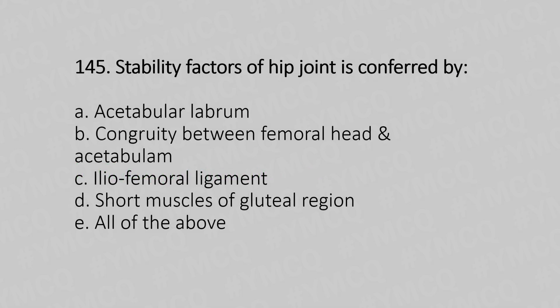Question 145 options — Option A: acetabular labrum. Option B: congruity between femoral head and acetabulum. Option C: iliofemoral ligament. Option D: short muscles of the gluteal region. Option E: all of the above. And the answer is Option E: all of the above.